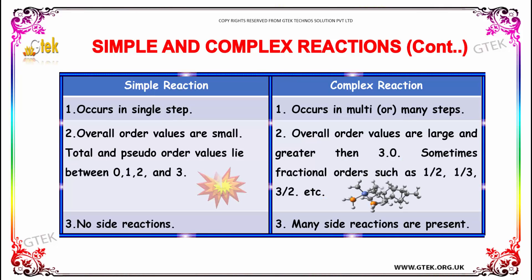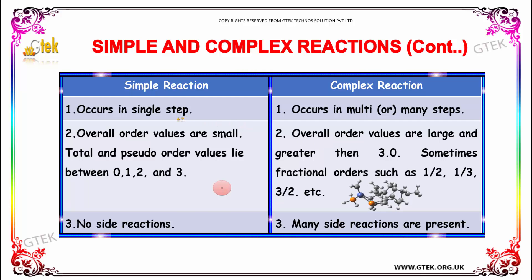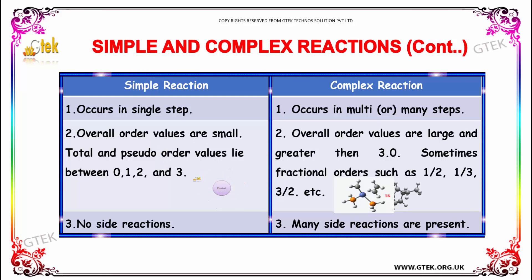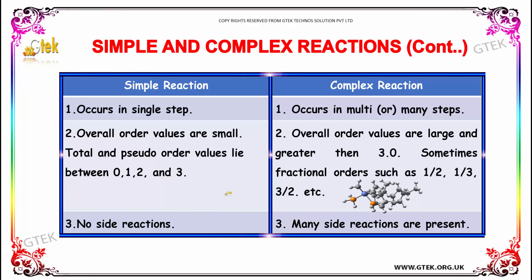Here is the difference between simple and complex reactions. A simple reaction occurs in a single step; a complex reaction occurs in multiple steps. For simple reactions, overall order values are really small — the total and pseudo order values lie between 0, 1, 2, and 3.